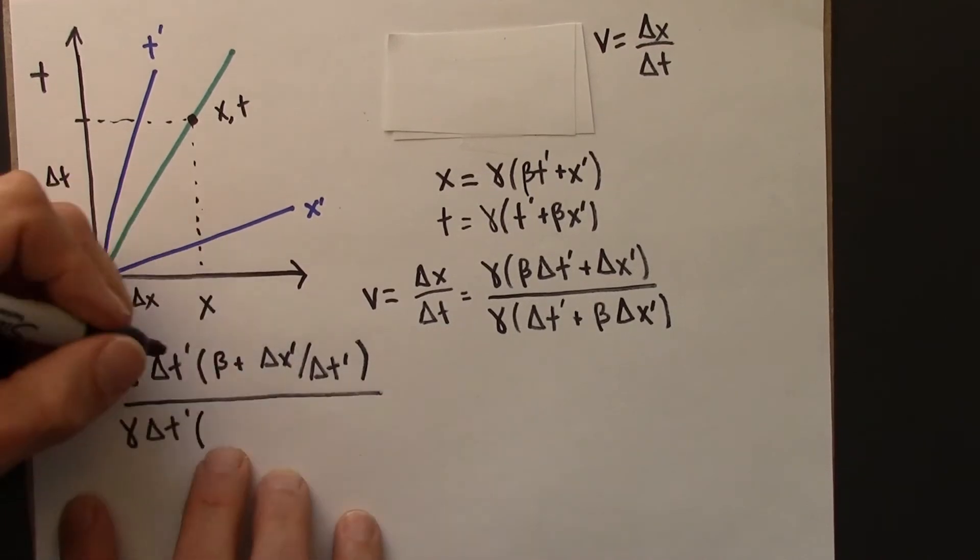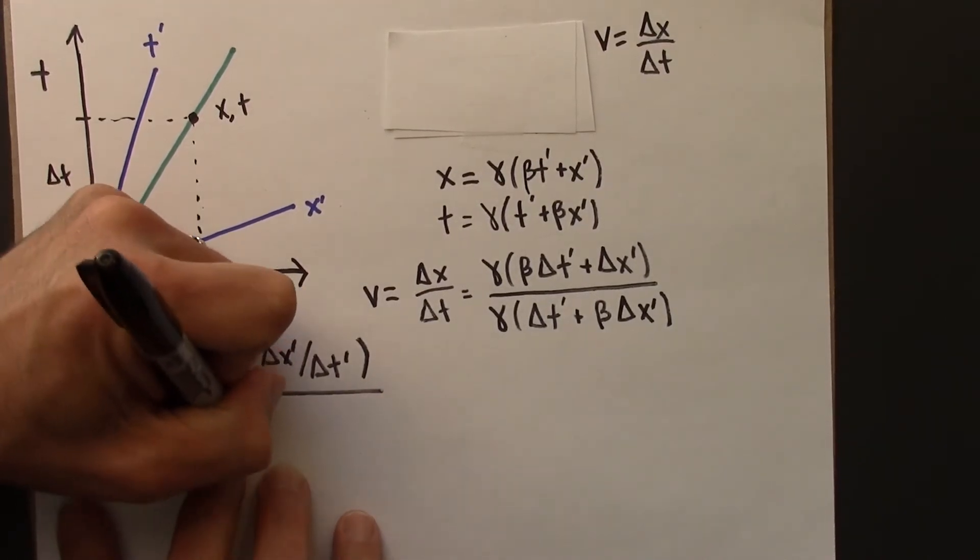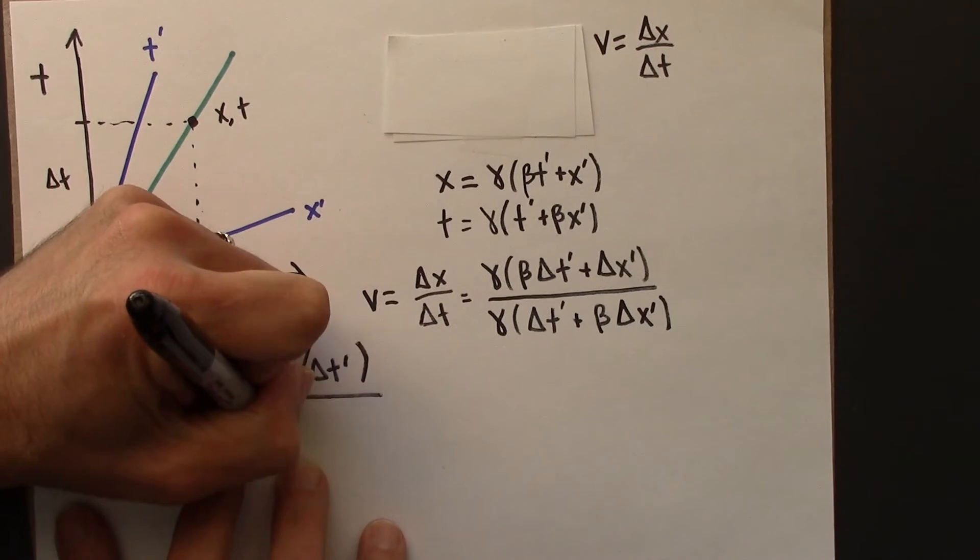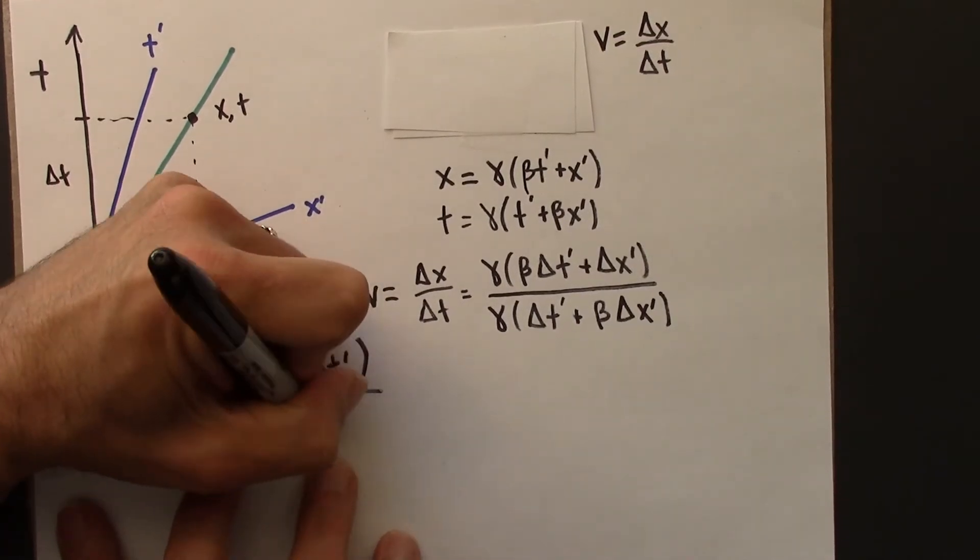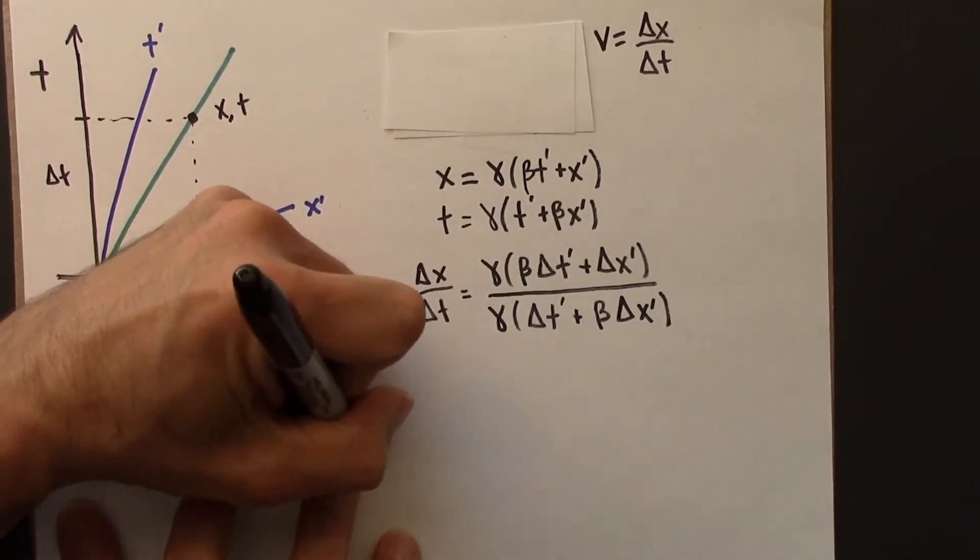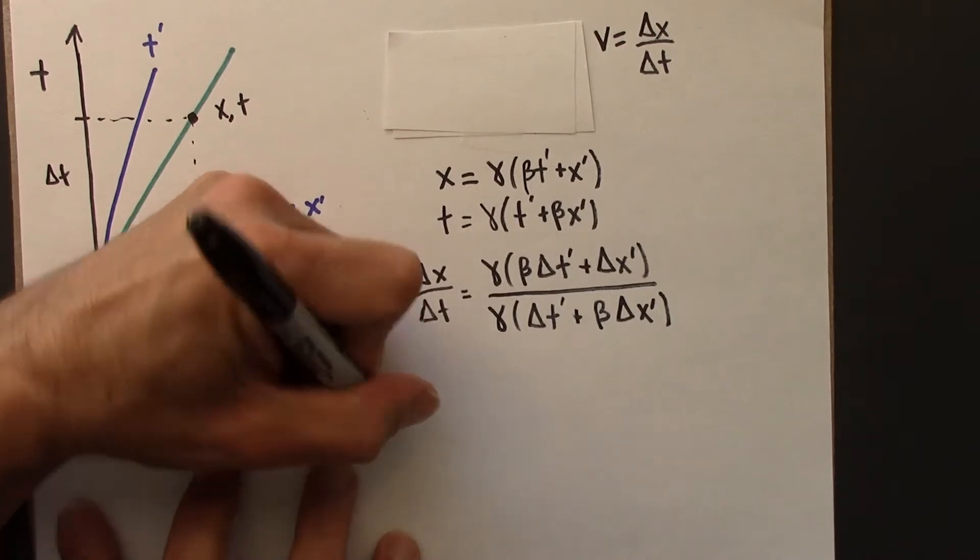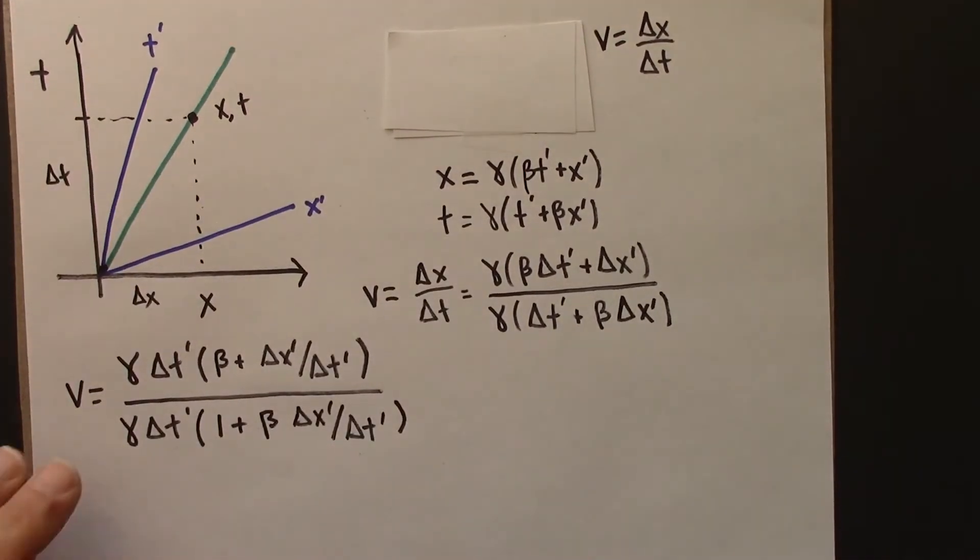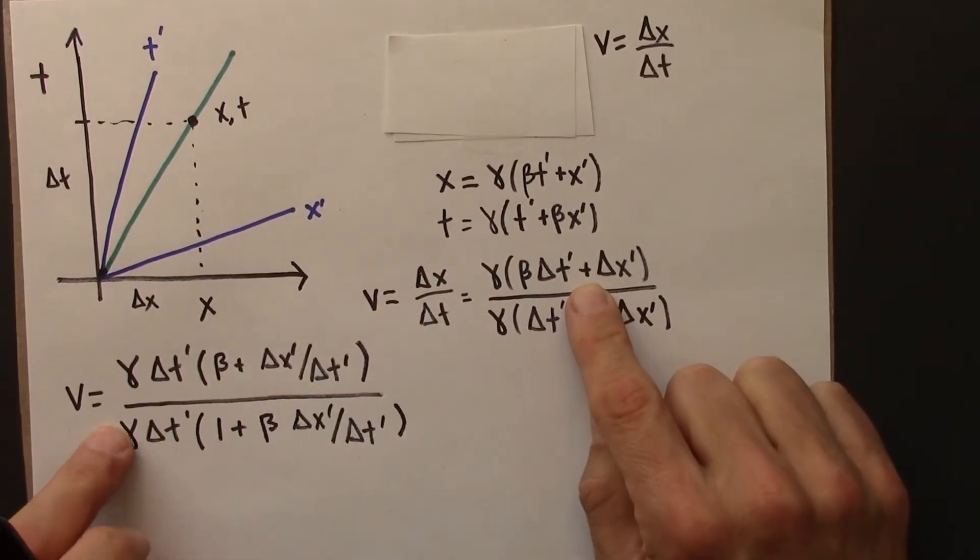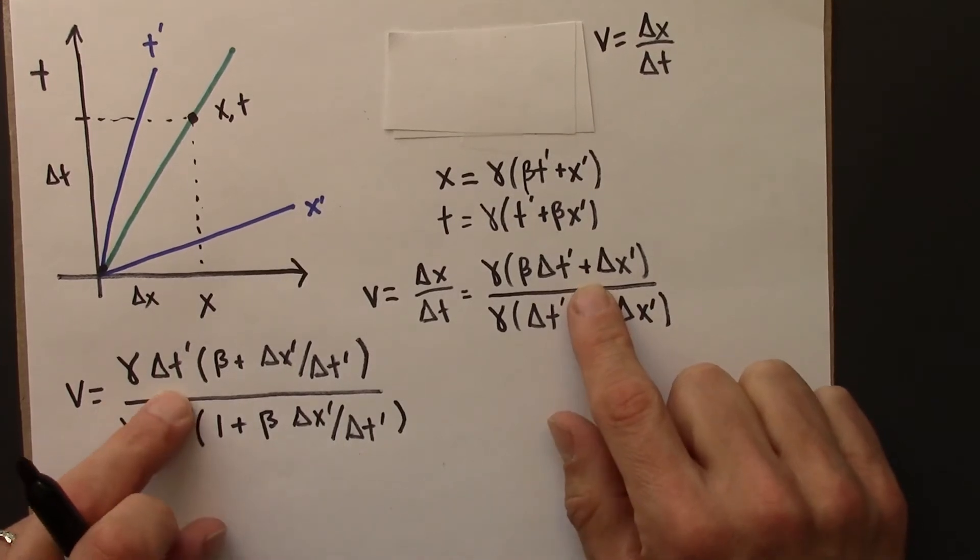So let me finish writing and then I'll explain what's going on. One thing that's going on is my sharpie is slowly dying. Okay. So from here to here, all I did was math. I just factored out a delta prime.